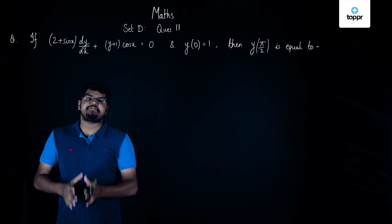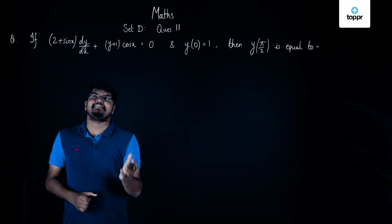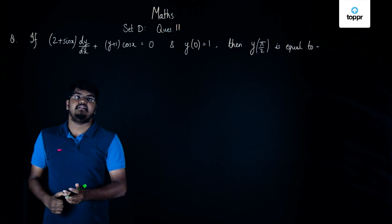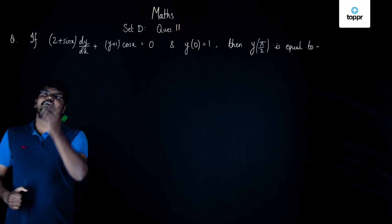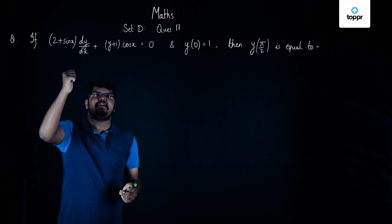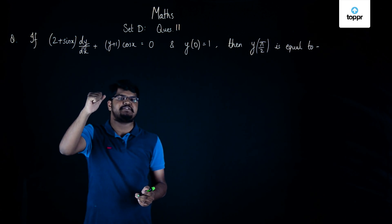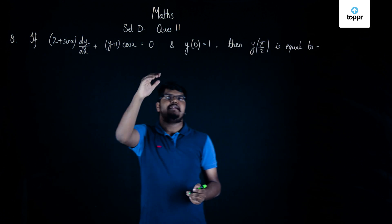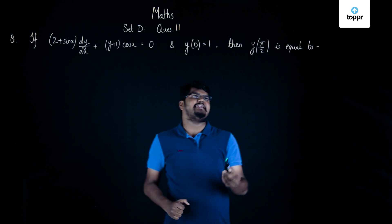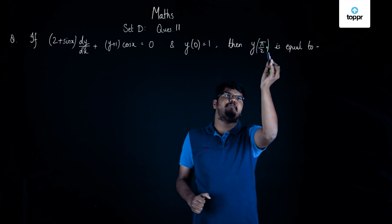Hello everyone. In this video we are going to do question number 17 of JEE 2017. The question is: if (2 + sin x) · dy/dx + (y + 1) · cos x = 0, and y(0) = 1, then we need to find the value of y(π/2).